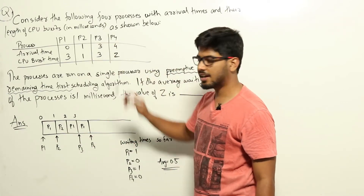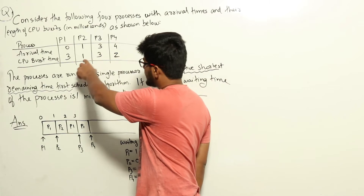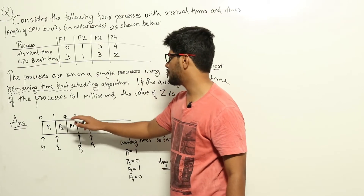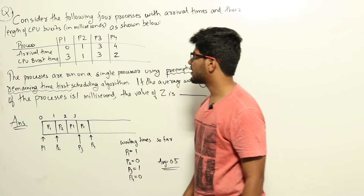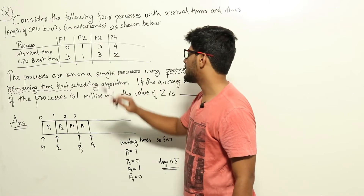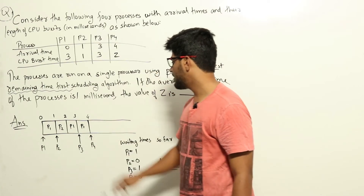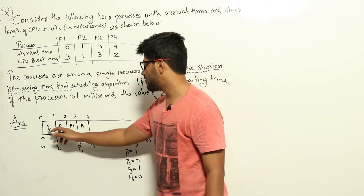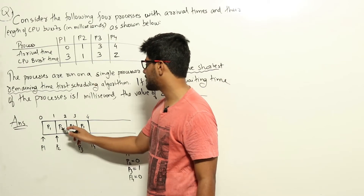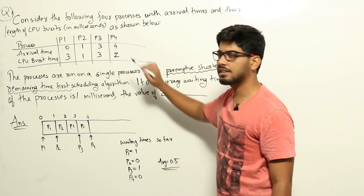At time 3, process P3 arrives with a remaining time of 3 milliseconds. However, P1 ran from 0 to 1 and from 2 to 3, meaning P1 already ran for 2 milliseconds out of its 3 millisecond burst, so P1's remaining time is only 1 millisecond. Since 1 is less than 3, P1 keeps running until time 4. At time 4, P4 arrives and P1 finishes. Now only P3 (3ms remaining) and P4 (Z ms remaining) are left.